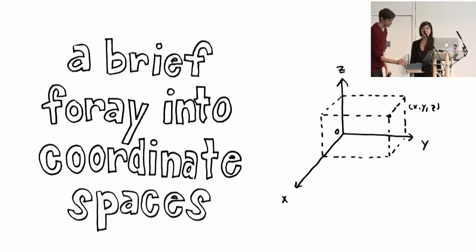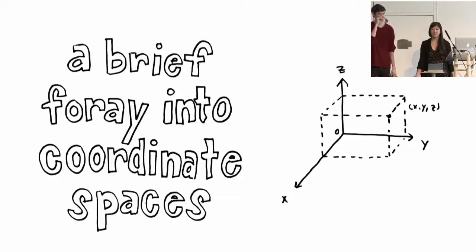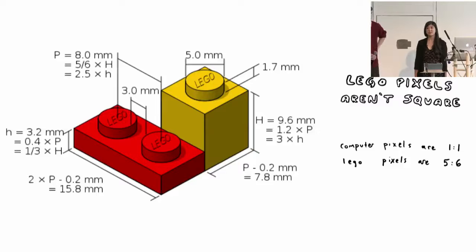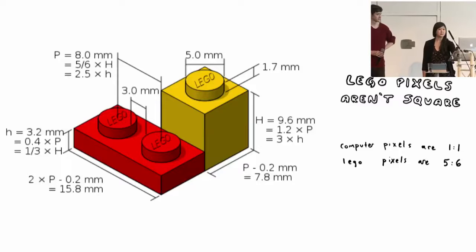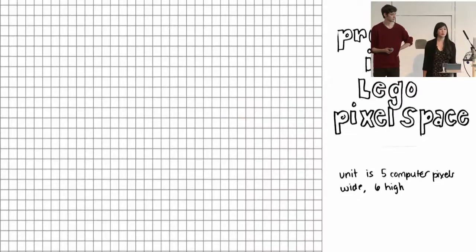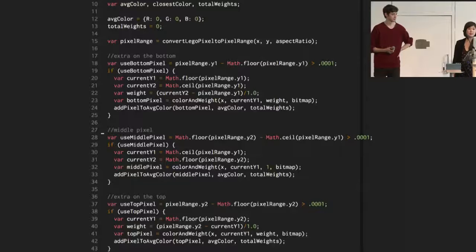It's worthwhile to take a brief foray into coordinate spaces and explain what we meant by running it on every fragment versus every pixel. One of the interesting challenges is that Lego pixels don't match up with computer pixels — they are not square. A one-by-one Lego brick is taller than it is wide; specifically, it has a width-to-height ratio of five to six. So when building an internal model of our Lego mural to determine the color of each Lego pixel, we have to take a weighted sample of up to three computer pixels. And when displaying a preview, the unit of drawing is five computer pixels wide and six computer pixels high.